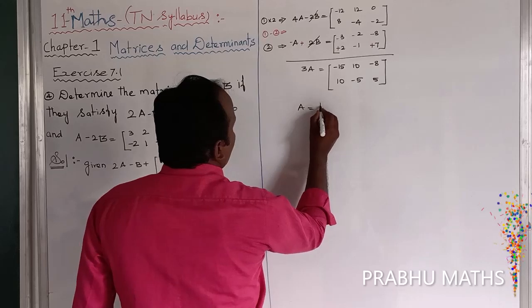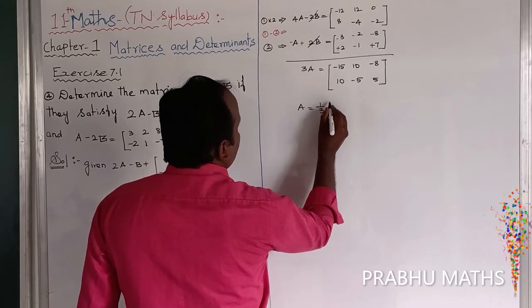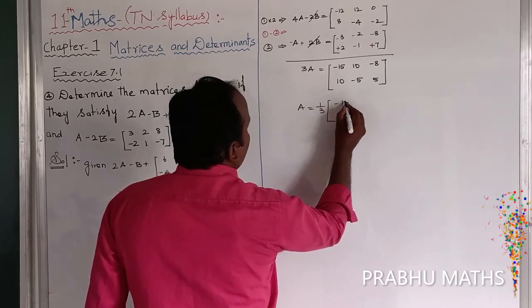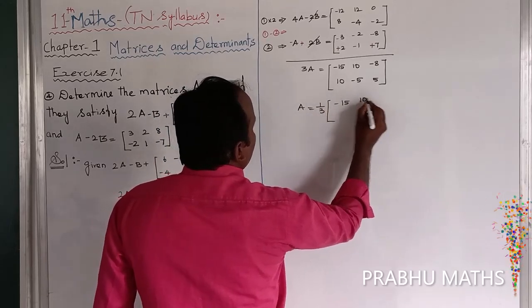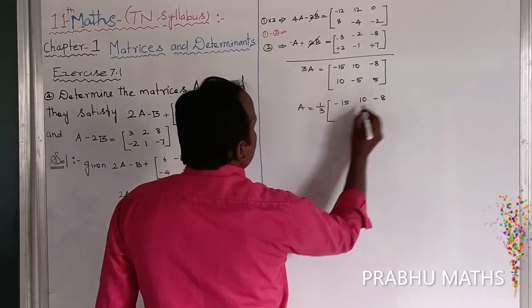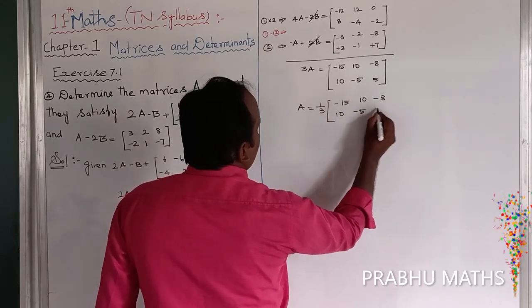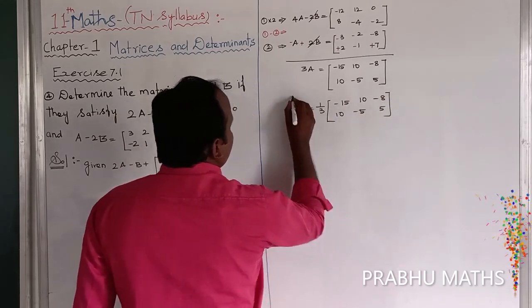Therefore A is equal to 1 by 3 into: minus 15, 10, 8, 10, minus 5, 5. This is the A value.